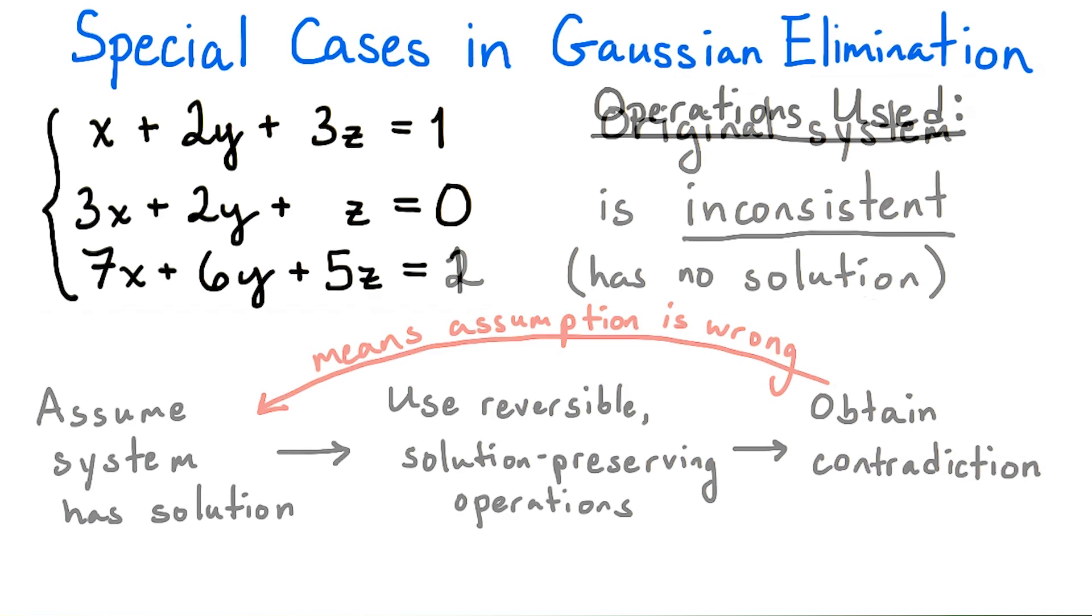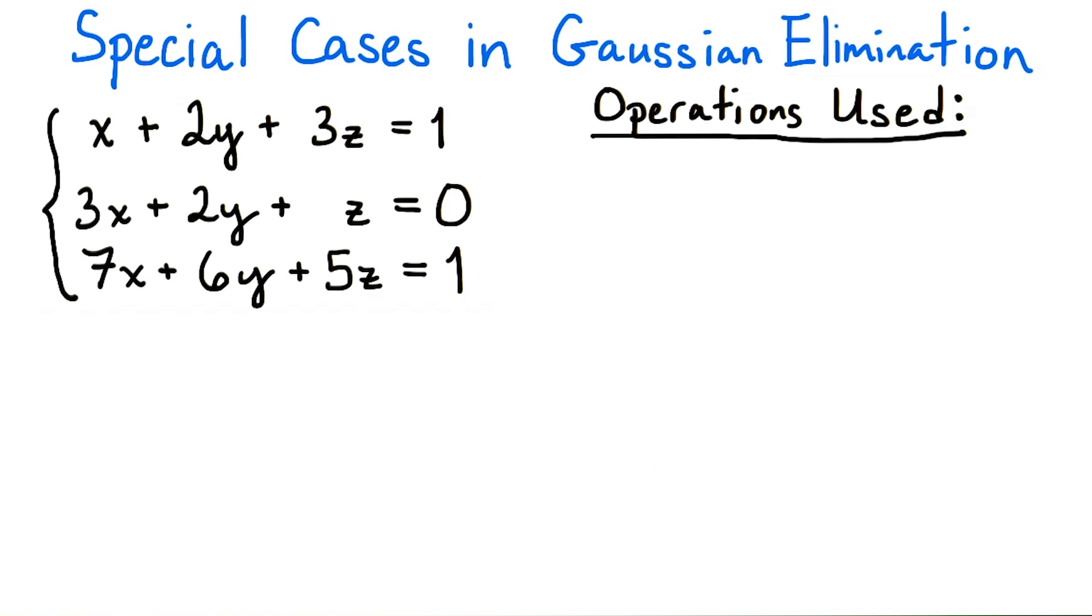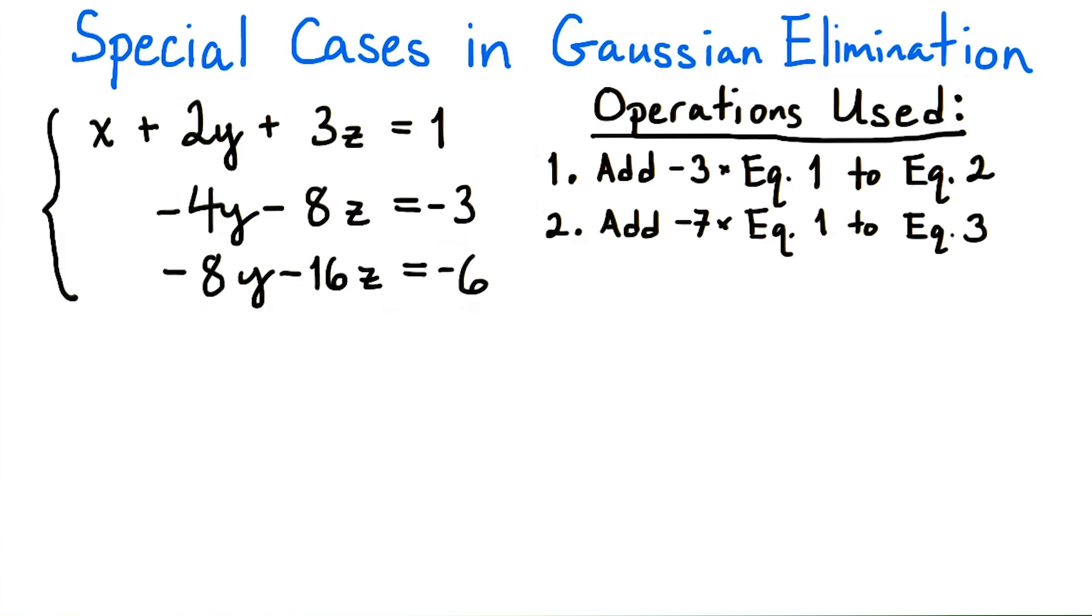This is a bit trickier. Let's modify the system from before just a little bit, making the constant term in the third equation 1 instead of 2. Again, we start by subtracting 3 times the first equation from the second and continue by subtracting 7 times the first equation from the third. The third equation now reads negative 8y minus 16z equals negative 6.